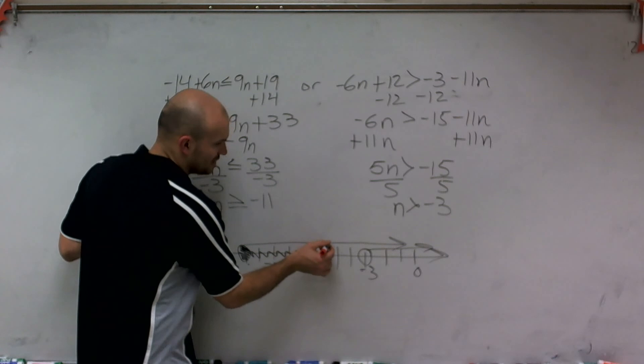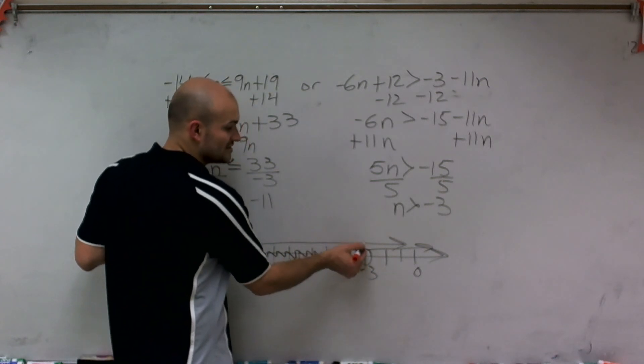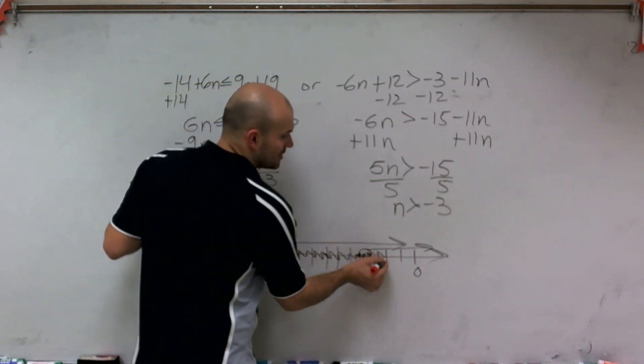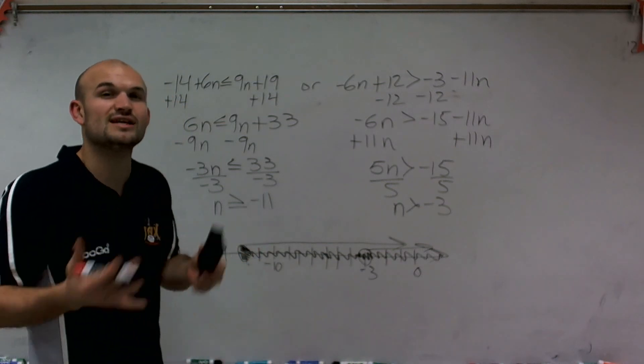See, it's true for this inequality here. Then it's not true on this inequality, but it's true for this one. So we can shade it. And then from here on out, it's true for both of them, which is a part of the or statement. So that's okay, because it could be true for one, the other, or both.